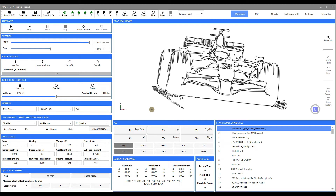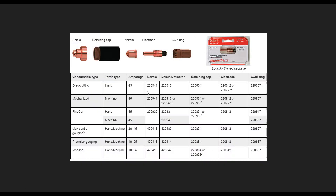What we're talking about with consumable groups are the actual components that are installed onto the end of your torch. All five of these individual parts — the shield, nozzle, electrode — we refer to as a consumable group.